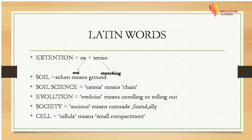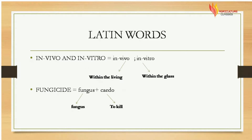Next is soil science, associated with the word catena which means chain. Next is evolution, made from evolutio, meaning unrolling or rolling out. Next is society, made with the word socius which means comrade, friend, or ally. Now in vivo means within the living, and in vitro means within the glass. Next is fungicide, made with fungus and caedo, where fungus means fungus and caedo means to kill.